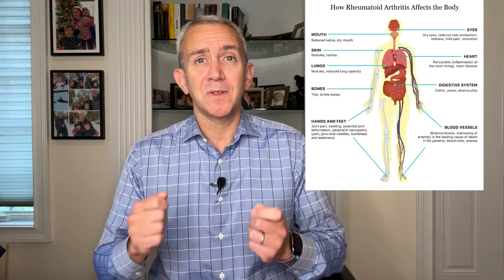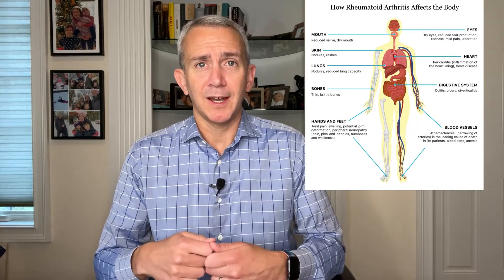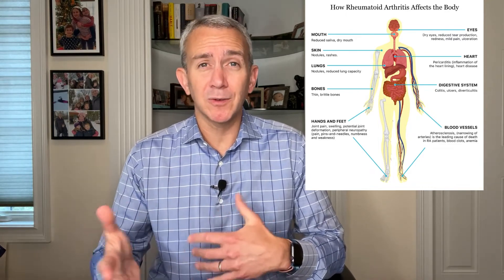Most autoimmune arthritis also attacks other parts of the body besides just the joints. Also, while osteoarthritis tends to be noted in just one joint at a time — like the right knee, for example — autoimmune arthritis often presents as multiple joint problems at the same time. It's very important to get an accurate diagnosis as soon as possible so that the condition can be brought under control, and affected organs that may also be involved, like the heart or the eyes, can be screened and monitored.